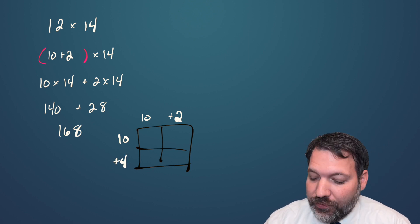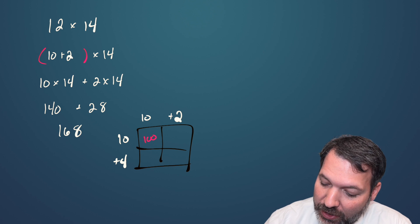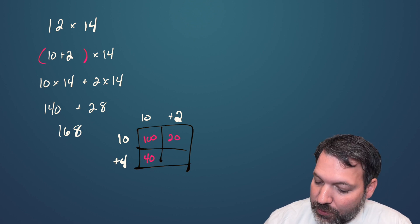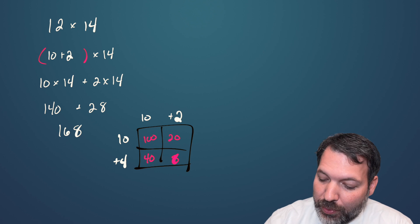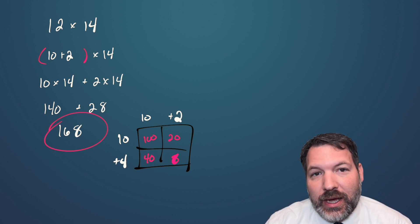Rather than represent the different distributions, we would just compute these partial products. 10 times 10 is 100, 10 times 2 is 20, 10 times 4 is 40, and 4 times 2 is 8. It's the sum of these different boxes that give us the product of 168.